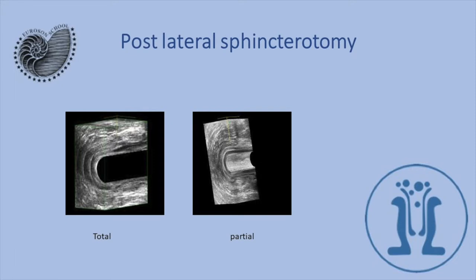Here we see anal sphincters after lateral sphincterotomy. Lateral sphincterotomy is an operation for anal fissures, and here we see a correct lateral sphincterotomy because it is only partial — here is the internal anal sphincter in the left position. But here the internal anal sphincter is absent, and the patient still has complaints because his fecal incontinence was not due to anal fissure.